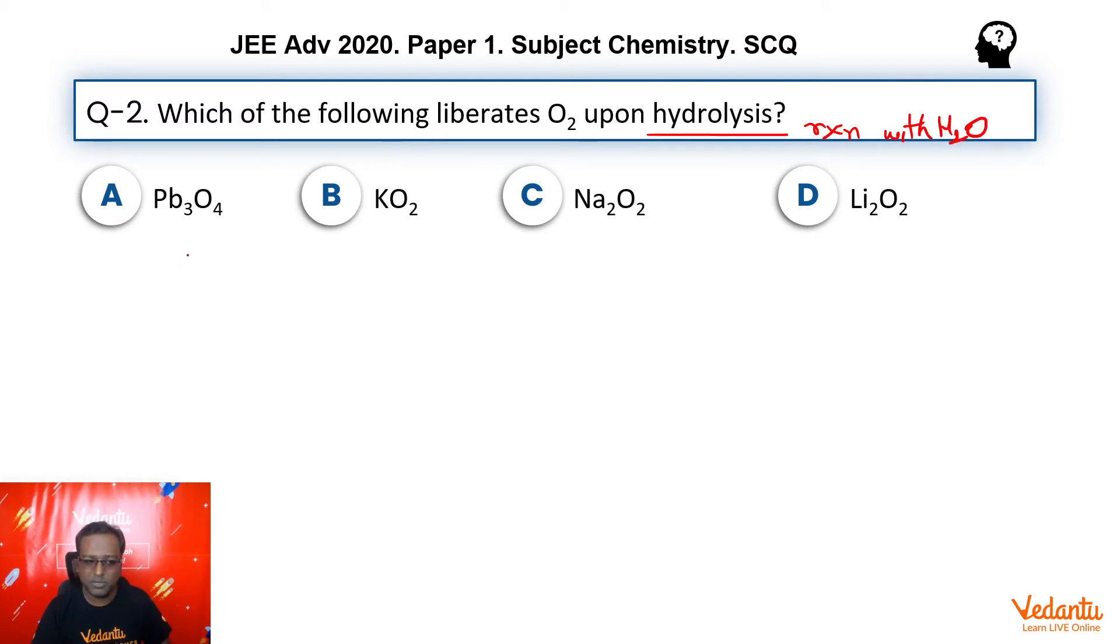the compound has to be first soluble in water and therefore, A gets cancelled because we know that this is a scarlet red colour precipitate. So, option A is cancelled out.